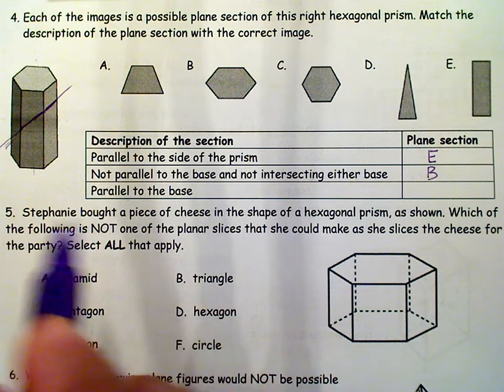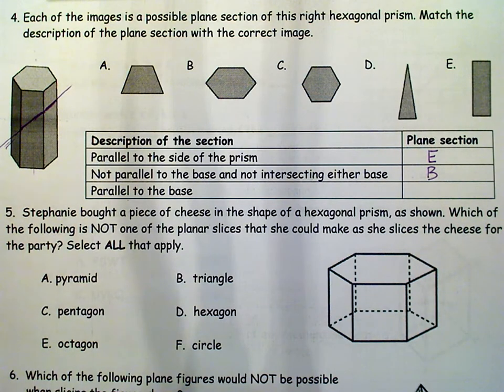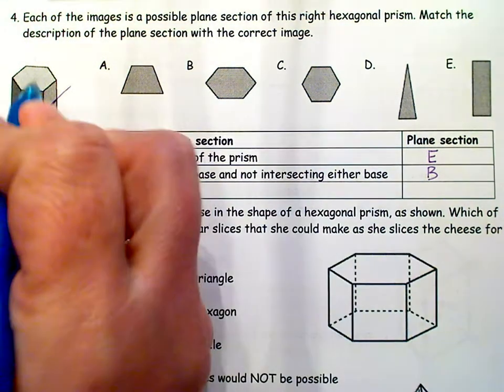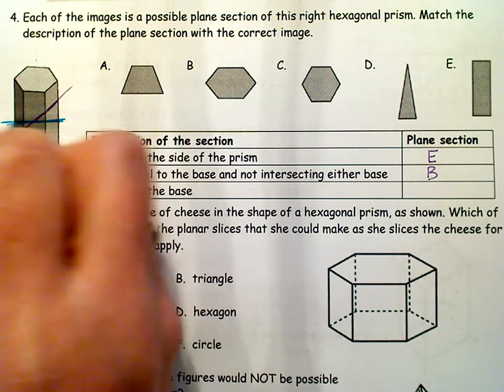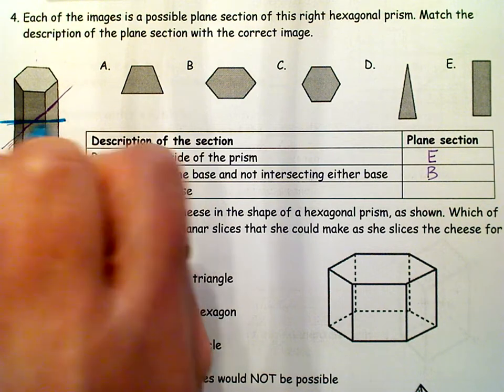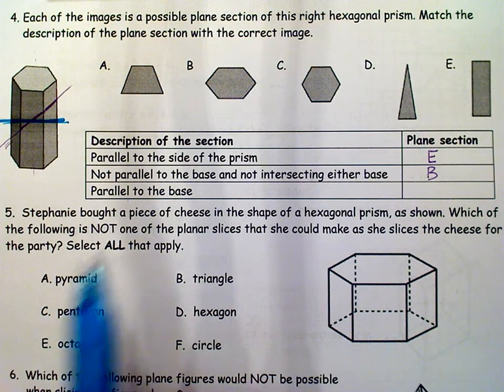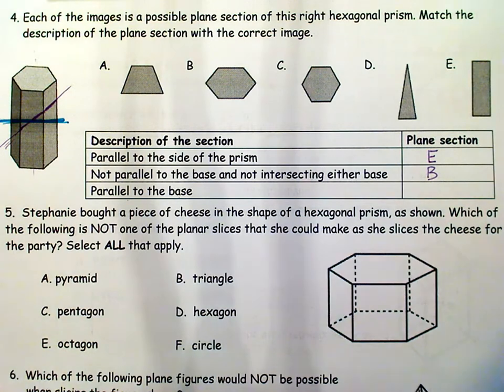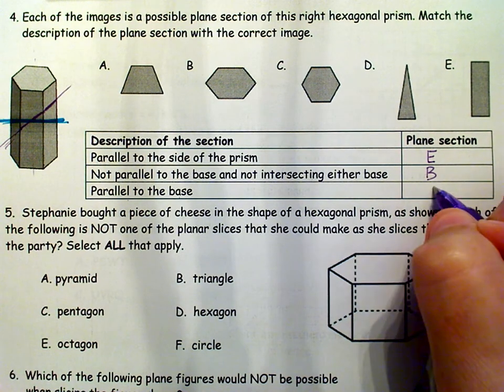And then the last one is parallel to the base. Here's your base, so parallel to the base is just like this. And again, if it's parallel to the base, it's going to take on the form of the base, which is a hexagon, so C is the correct answer.